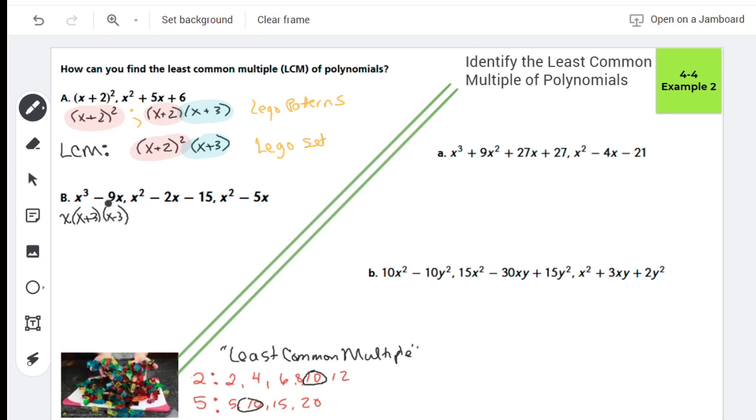So x cubed minus 9x is going to factor into x times x plus 3 times x minus 3. I'm getting that because I recognize that when I factor out the x, I had a difference of squares, and then I used our difference of squares formula. On this one, I know I'm going to have an x minus and an x plus, because my minus falls down and I need opposite signs. And what multiplies to 15 that subtracts to make 2? That's 5 and 3. And then on this last one, they have an x in common, so I'm going to factor my x out.